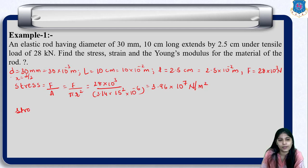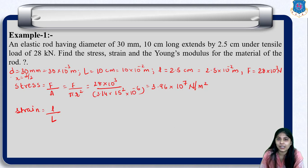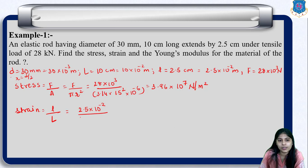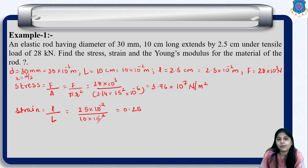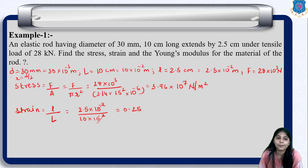Now for strain. Strain is very simply the change in length upon original length. Change in length is 2.5×10⁻² and original length is 10×10⁻² meter, so it will be simply 0.25. The powers of ten cancel out. Remember that strain is a dimensionless quantity, so no unit will be there.